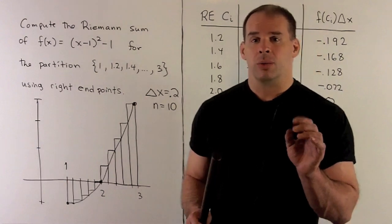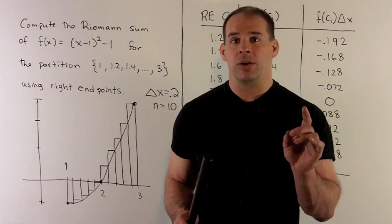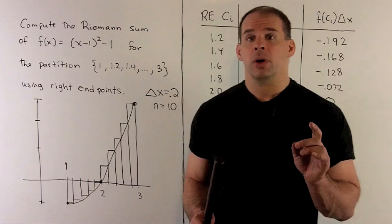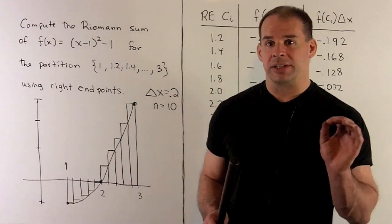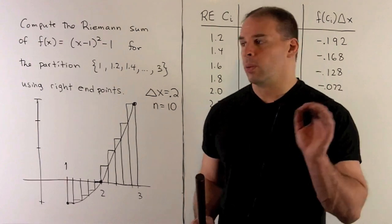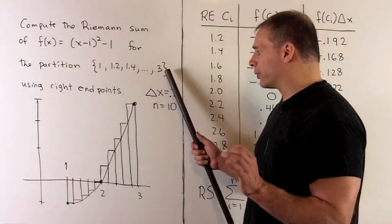So the idea here is we have to figure out our partition, and then we'll take a look at the endpoints. So we start at 1, and then I'm just going to keep adding delta x until we get to 3. So we'll have 1, 1.2, 1.4, all the way up through 3.